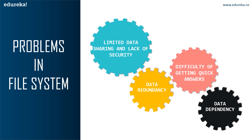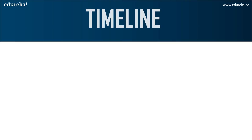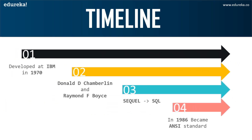So these were a few problems faced using the file system, and the solution for this is SQL and database. SQL was developed at IBM by Donald D. Chamberlin and Raymond F. Boyce in the early 1970s. It was initially called SEQUEL, that is Structured English Query Language, but later it was changed to SQL because SEQUEL was a trademark of a UK-based engineering company. In the year 1986, ANSI and ISO deemed SQL as a standard language in relational database communication.